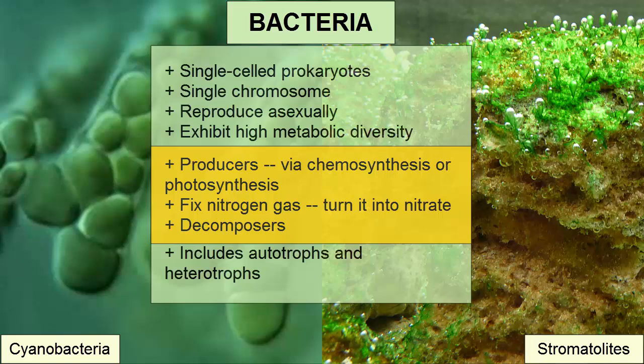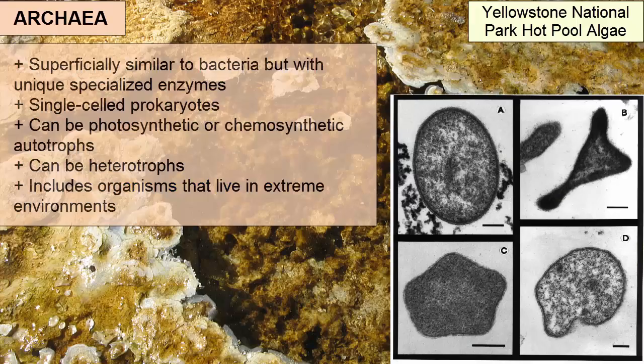An example is a type of cyanobacteria that created mounds known as stromatolites. The Archaea kingdom is superficially similar to bacteria but with genes capable of producing different kinds of enzymes. They are also single-celled prokaryotes and can be heterotrophs or autotrophs. They include most organisms known as extremophiles, as they often live in environments with extreme conditions.